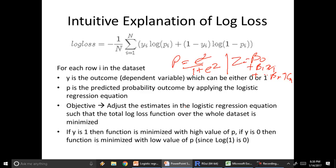The objective is to adjust the estimates in the logistic regression, that is find out values of beta 0, beta 1, all the way till beta n, such that the total log loss function of the whole dataset is minimized.